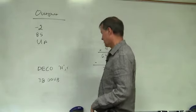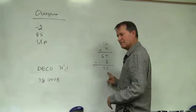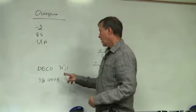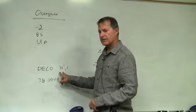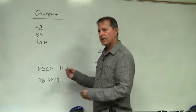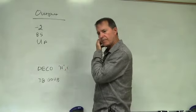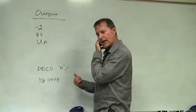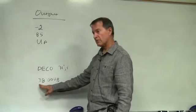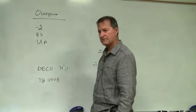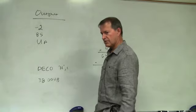Why is it 0048 instead of 4800? Any time you put a character constant in the operand specifier, it always puts it in the right half — the right byte. Was this 38 00 48? Let's verify with the simulator: DESO H immediate, stop, dot end. The output is 72. We were right.